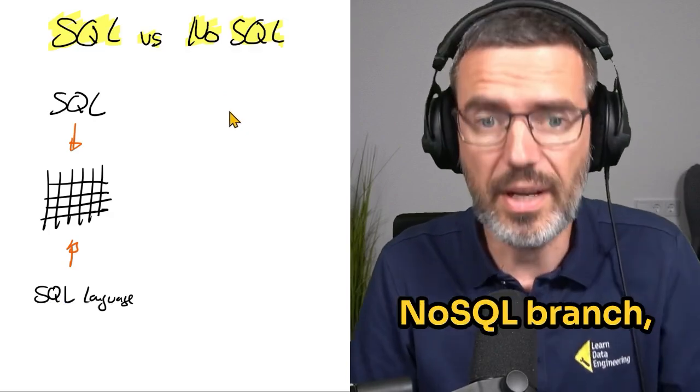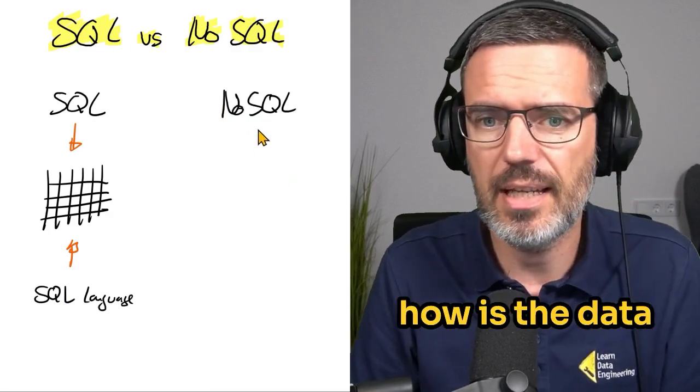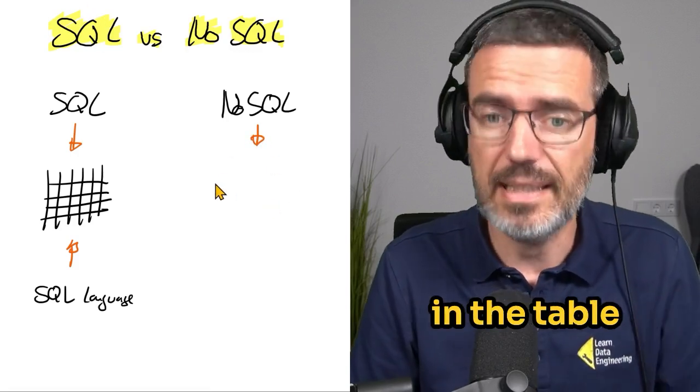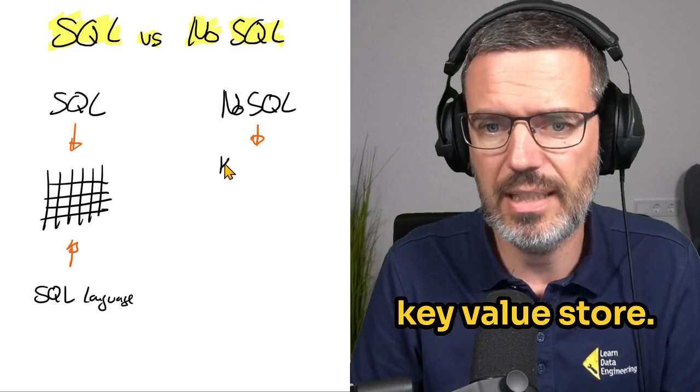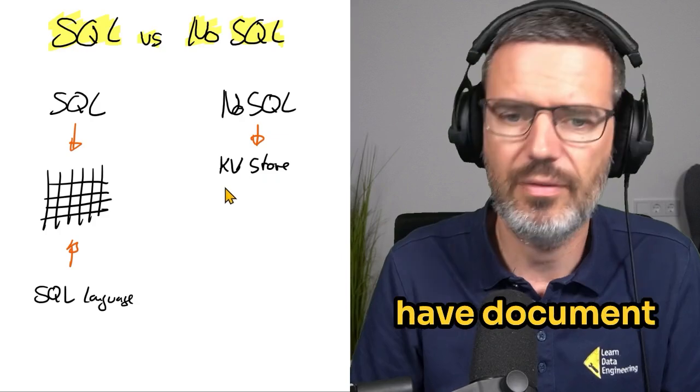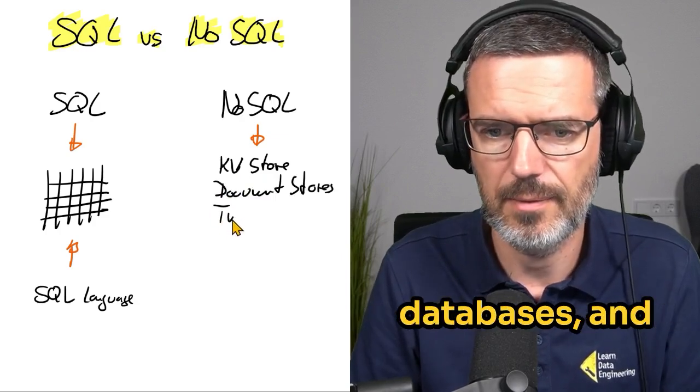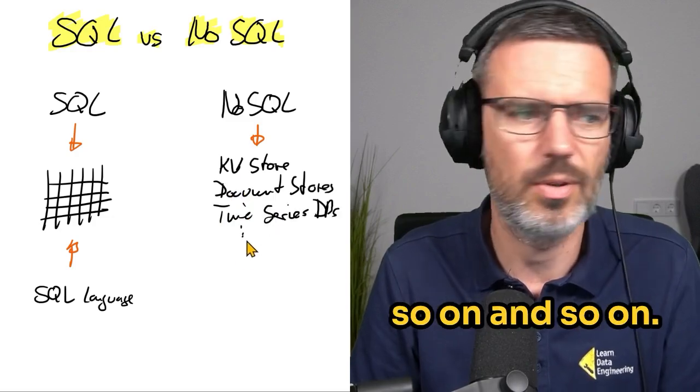Then the NoSQL branch, how is the data structured here? Usually the data is not structured in the table format, right? You could have a key value store or you could have document stores, time series databases, and so on.